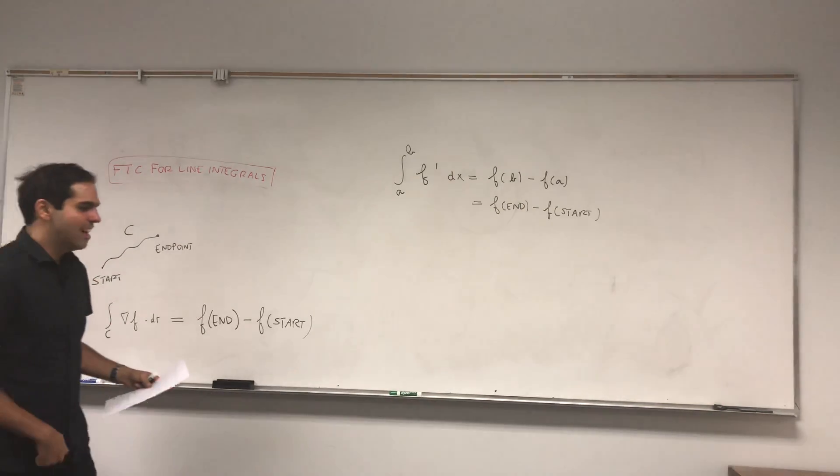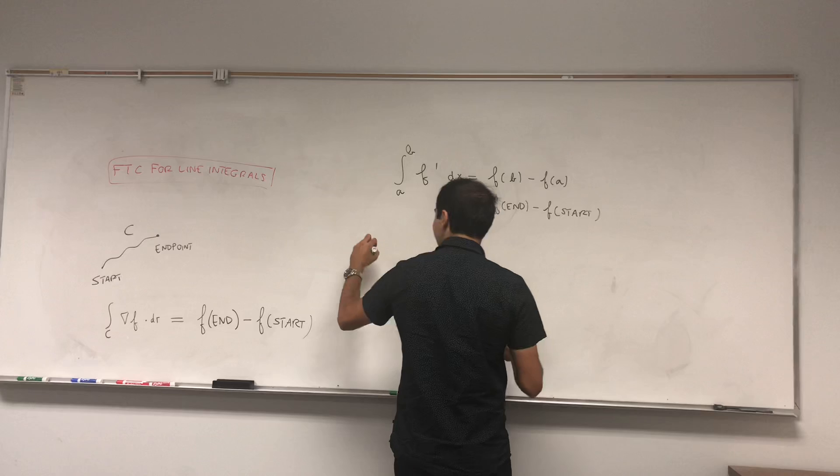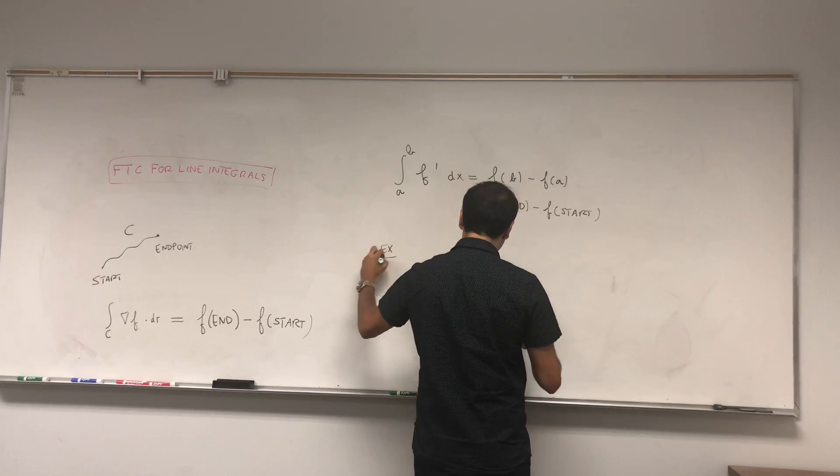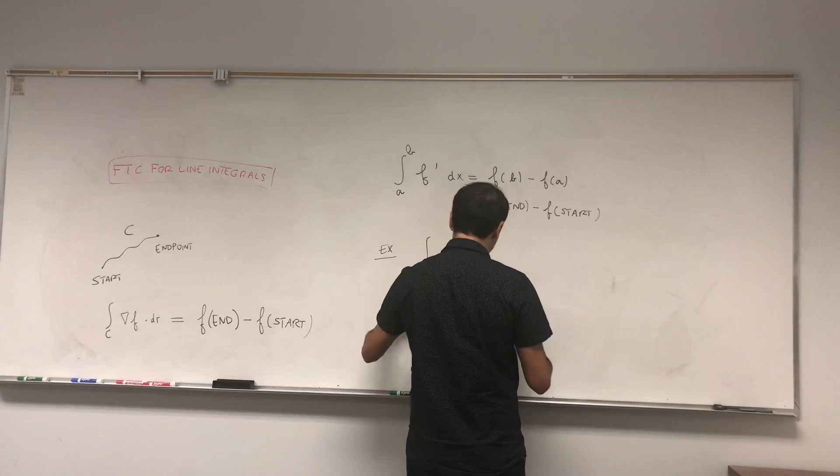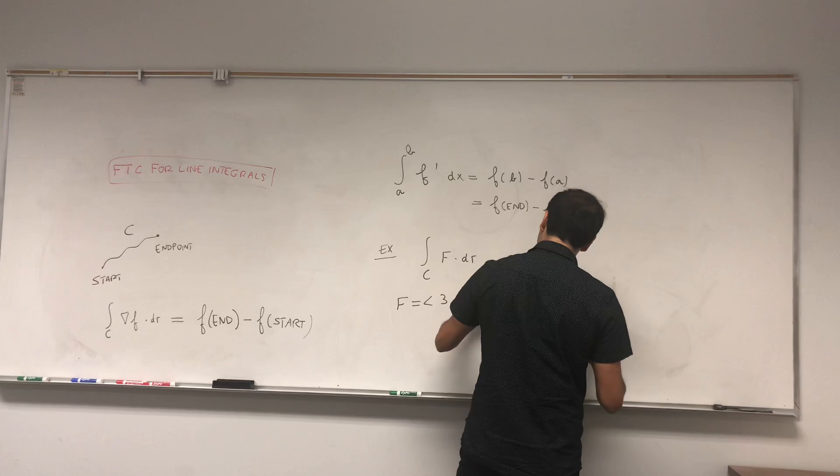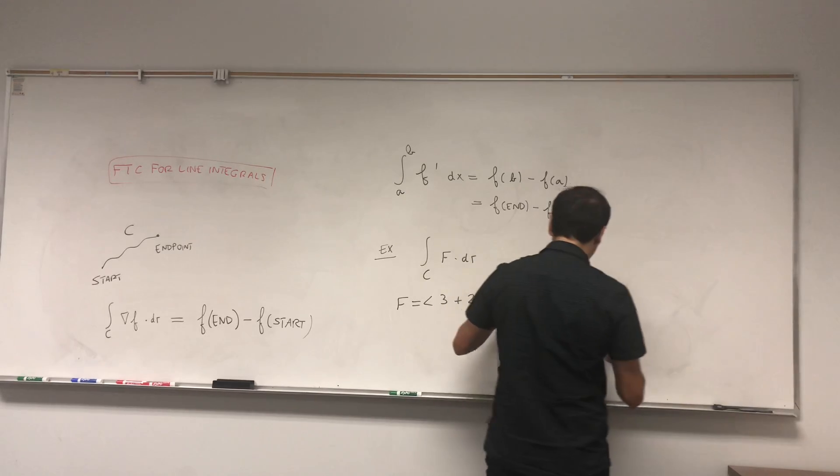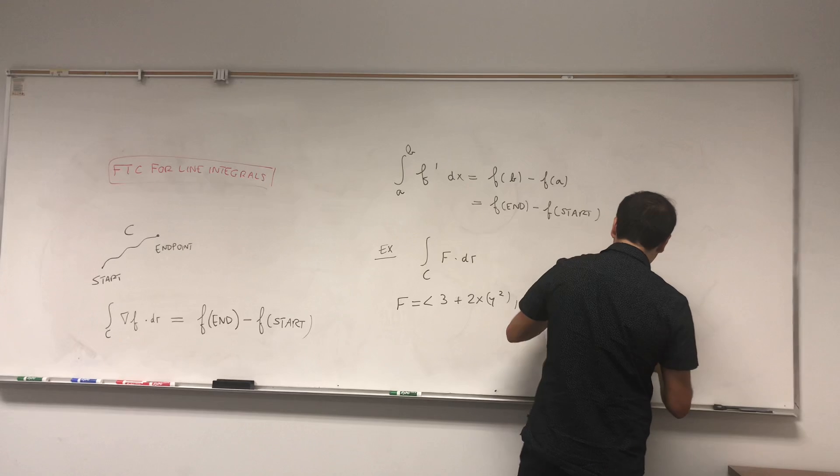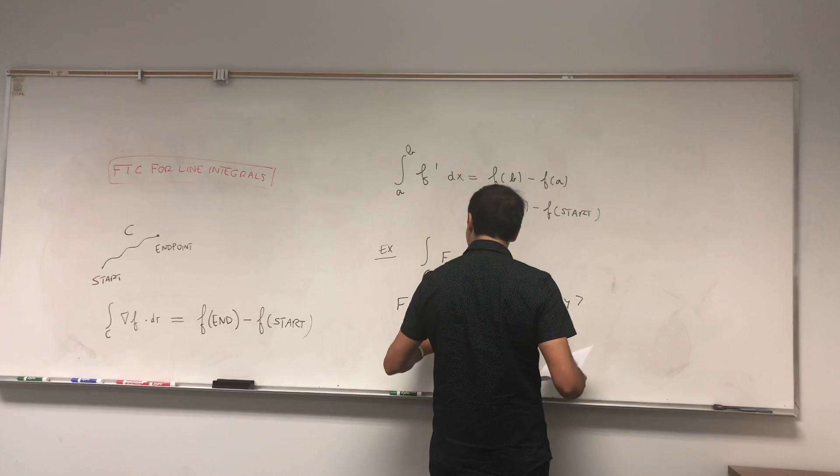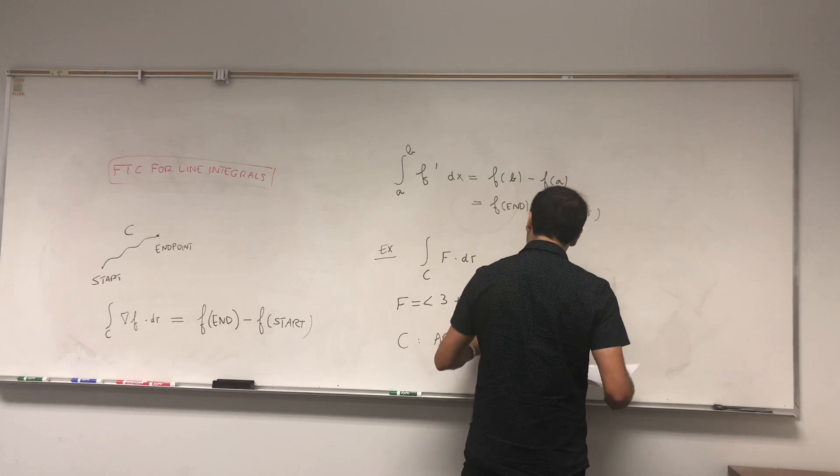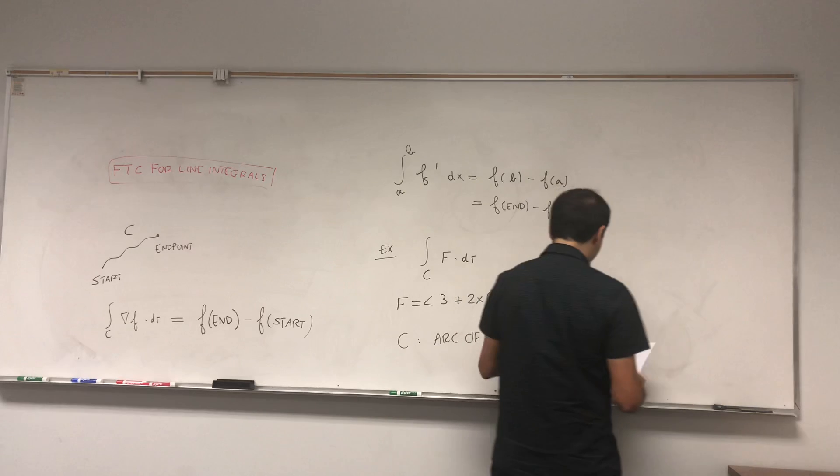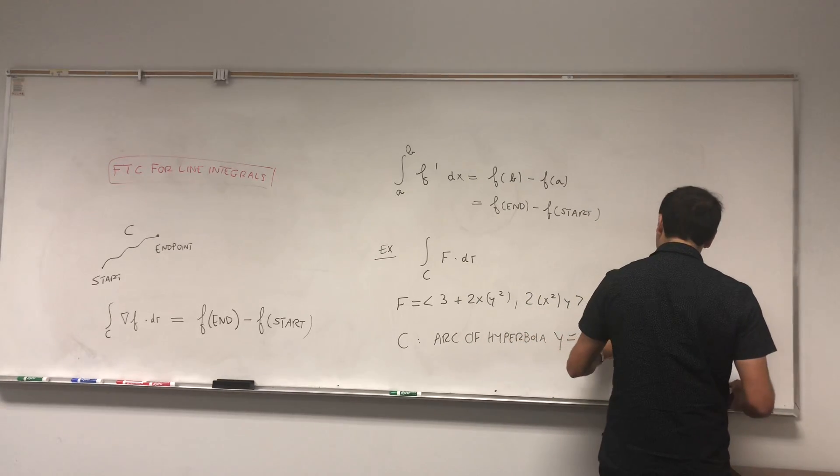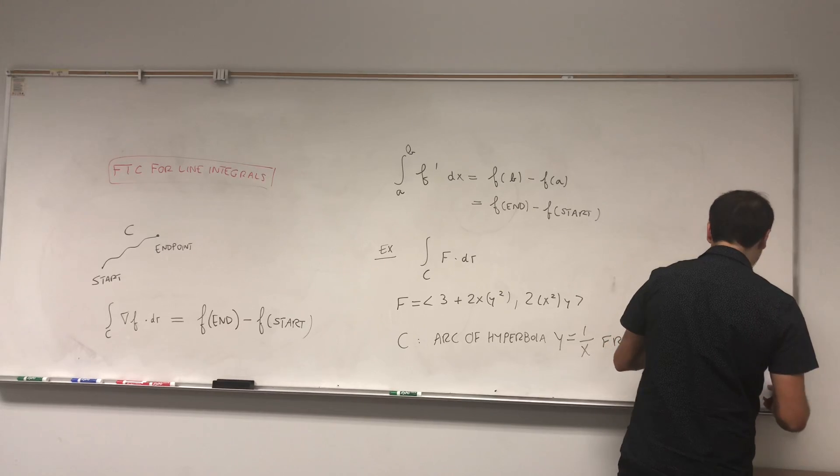And indeed, let's do an example. Let's calculate F dotted with dr, where F is 3 plus 2xy squared, 2x squared y, and C, let's make it complicated, it's the arc of the hyperbola y equals 1 over x from 1,1 to 4, 1 quarter.